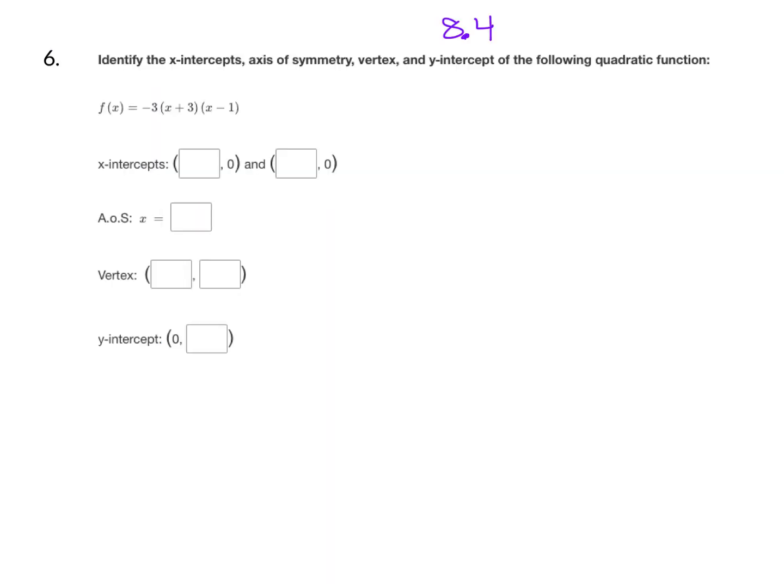Question number six comes from lesson 8.4 on quadratic functions in intercept form. We want to identify the x-intercepts, axis of symmetry, vertex, and y-intercept of the following quadratic function. Remember, you can always use your graphing calculator to help you too, but this can all be done by hand. So the first step is to find the x-intercepts. And you do that by taking each of the factors and setting them equal to zero.